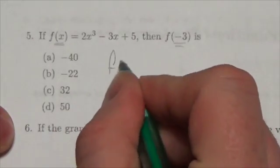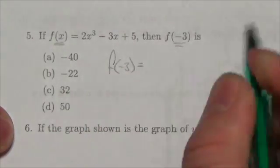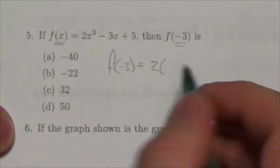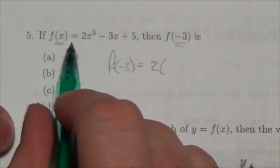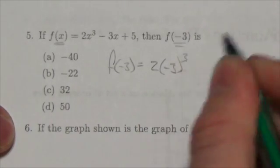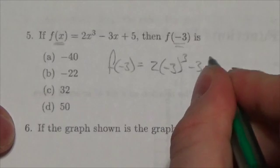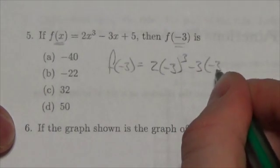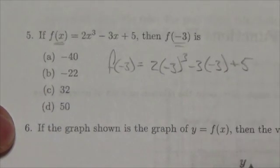So what I mean is f of negative 3 is equal to 2 times, I used to say 2 times the independent variable cubed. Well, now the independent variable is negative 3. So 2 times negative 3 cubed minus 3 times the independent variable, negative 3, plus 5.